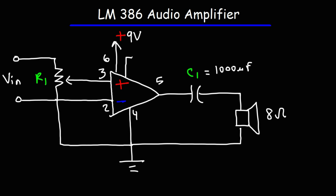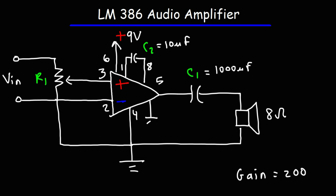What we're going to do is connect a capacitor across pins 1 and 8. We'll call this capacitor C2 and give it a value of 10 microfarads. This particular circuit will then have a gain of 200. But in order to make sure that we don't have any instabilities in the circuit, we need to add another capacitor — C3 — connected between ground and pin 7, which is the bypass pin. We'll give C3 a value of 100 microfarads. Anytime you want to increase the gain from 20 to something higher like 200, you need to put a capacitor between the bypass pin and ground.